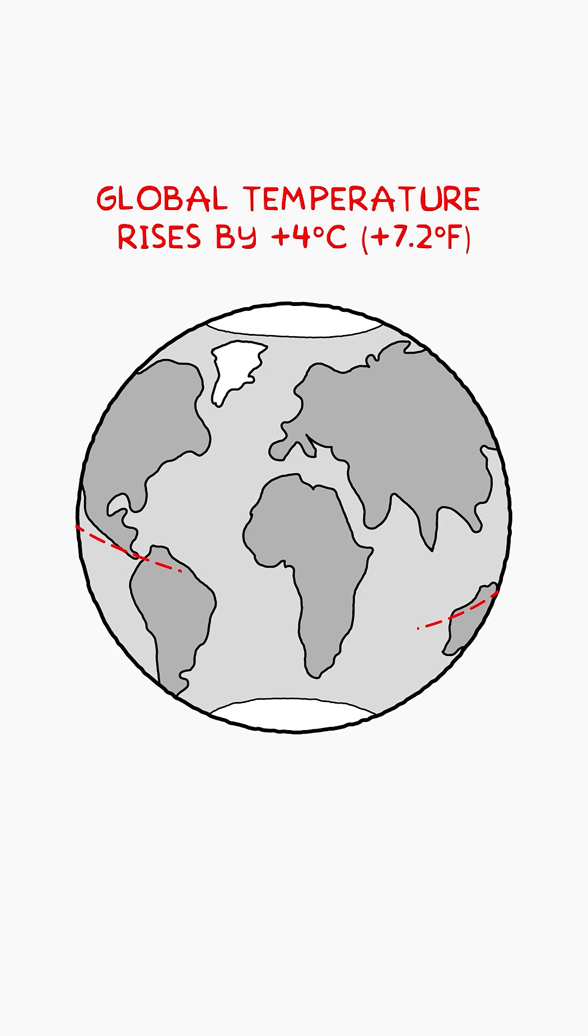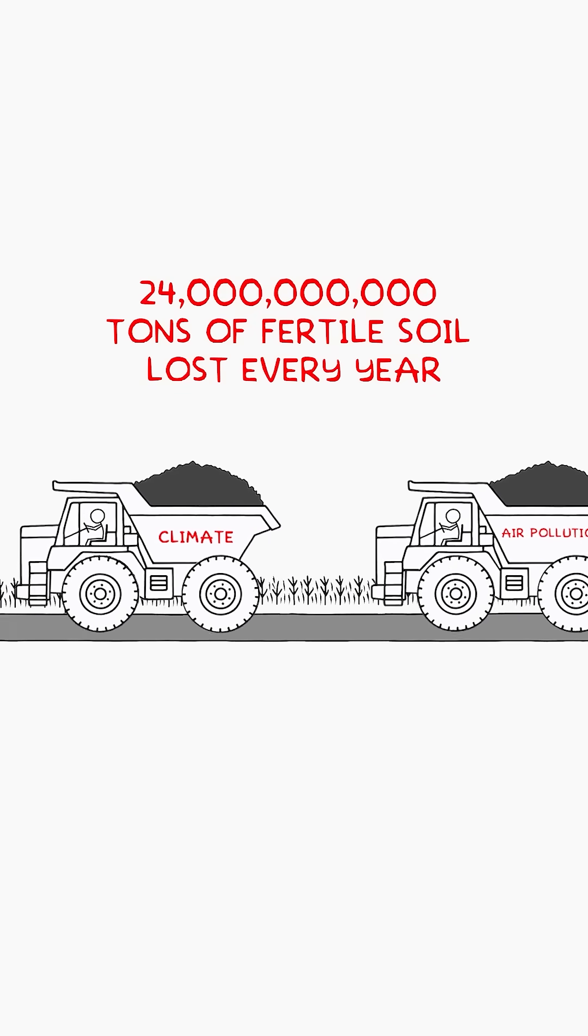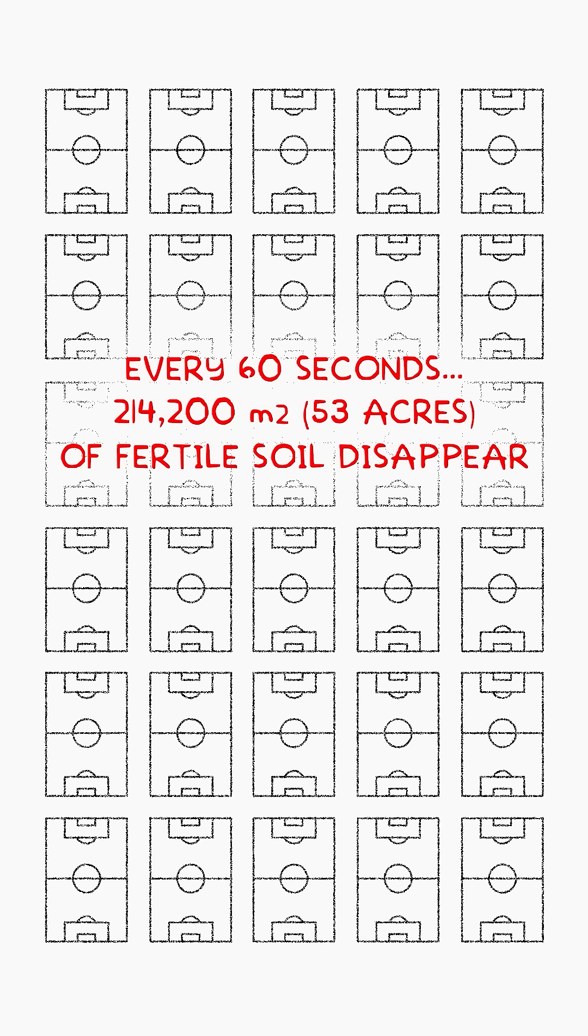This will raise global temperature by 4 degrees Celsius, turning southern regions into deserts. We're already losing 24 billion tons of fertile soil each year. Every 60 seconds, 30 football fields of farmland vanish.